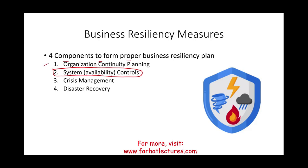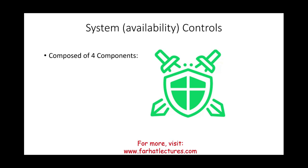Business resiliency has four components. The first is organization continuity planning — basically having a plan to come back. The second is system availability controls, which is the focus of this session. System availability controls are composed of four components: physical controls, IT controls, redundancies, and backup files. These are controls that help prevent incidents or minimize their effect when something happens.